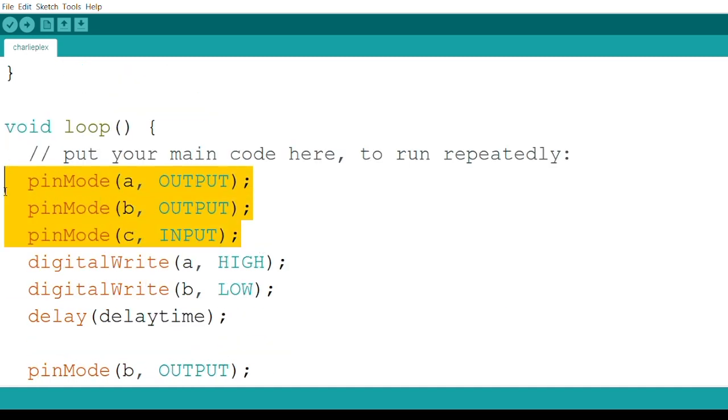Leave the setup empty and inside the loop, the first three lines decide which pin is going to act as an input and which one is going to be an output. Each of the outputs is assigned a state, either high or low, depending on which LED has to be turned on.